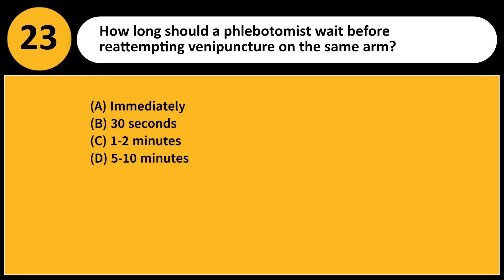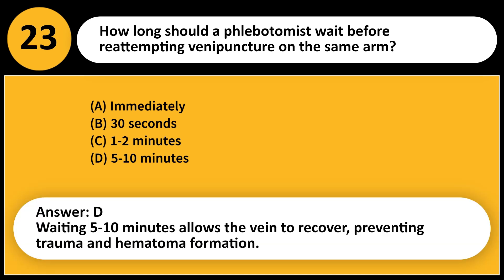How long should a phlebotomist wait before re-attempting venipuncture on the same arm? A. Immediately. B. 30 seconds. C. 1 to 2 minutes. D. 5 to 10 minutes. Answer: D. Waiting 5 to 10 minutes allows the vein to recover, preventing trauma and hematoma formation.